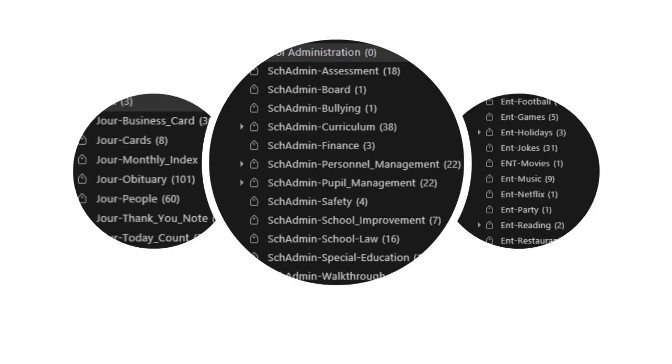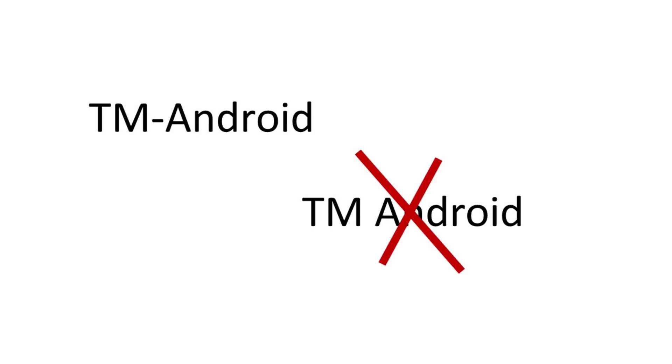Here are some examples: sub-tags under entertainment begin with ENT; subjects under journal begin with J-O-U-R; sub-tags for school administration begin with S-C-H-A-D-M-I-N. The main tags are simply placeholders that give me a place to put sub-tags underneath them. One very important tip when naming tags or notebooks: never include a space in the name. Use a dash or underscore between words. That way, when you perform a search using that name, Evernote will see it as one unit and you won't have to remember to enclose it in quotation marks.